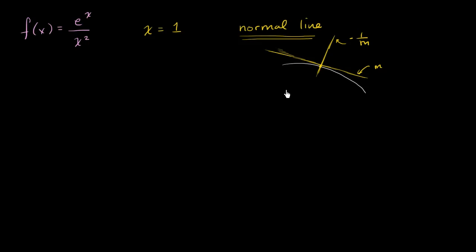So with that as a hint, I encourage you to find the equation of the normal line to this curve when x equals 1. Let's find the slope of the tangent line, and then we take the negative reciprocal to find the slope of the normal line. To find the slope of the tangent line, we just take the derivative and evaluate it at x equals 1.